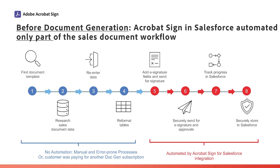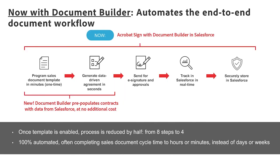To demonstrate the benefits of document generation, let's look at the process organizations have used in the past: steps to find the data, re-enter it, and reformat it — all very manual. But once the document was created, the Salesforce and Acrobat Sign integration automatically automates the remaining phases, getting agreements signed in minutes. Now fast-forwarding to today, IT and Document Builder can enable a document template, format, and automate in minutes. Once a sales rep utilizes it, the document can be completed in seconds and automatically sent for e-signature. What once took eight steps is now down to four, and everything is completely automated.